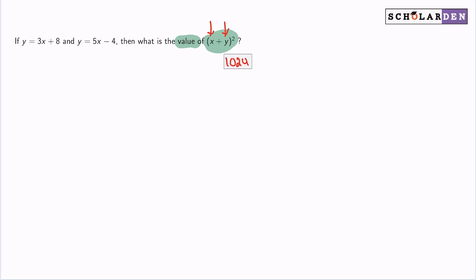My plan is going to be find x and y, and then plug it in. So when I take a look at my information, y equals 3x plus 8 and y equals 5x minus 4, what we can do here is we can go ahead and combine these equations by subtracting.